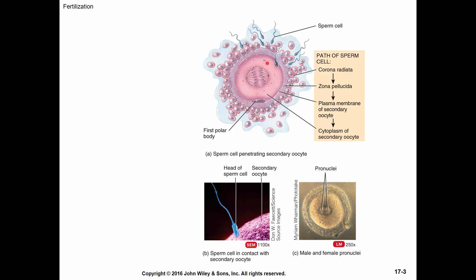In this picture, you see a secondary oocyte surrounded by granulosa cells — that's the corona radiata — and there are several sperm. The cap of the sperm, called the acrosome, contains enzymes that are released in the acrosomal reaction, and the sperm can then burrow in between the cells. When one sperm makes it in, granules underneath the membrane are released in what's called the cortical reaction, and the zona pellucida becomes impenetrable so no other sperm can enter.